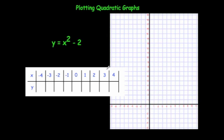Now let's draw another quadratic. This time we're going to draw y equals x squared minus 2. So we're going to square the x number and take away 2. 4 squared is 16, take away 2 is 14. 3 squared is 9, take away 2 is 7. 2 squared is 4, take away 2 is 2. 1 squared is 1, take away 2 is minus 1. 0 squared is 0, take away 2 is minus 2.